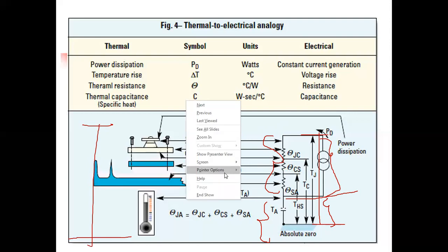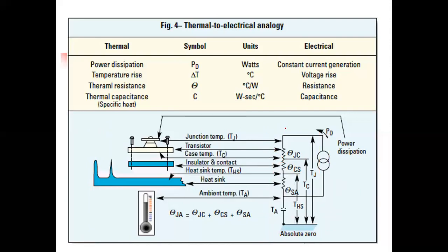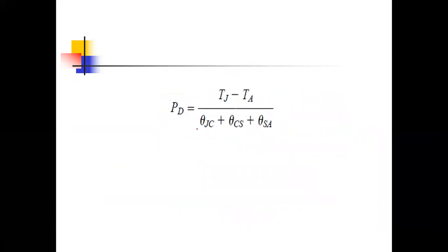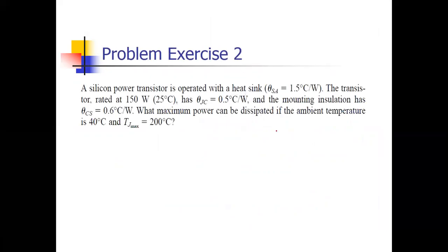The junction temperature spans from top to bottom in the thermal model, divided into two parts: the ambient temperature Ta at the bottom, and the upper part which is total thermal resistance θ multiplied by power dissipation Pd. From this expression, power dissipation is (Tj − Ta) divided by the sum of thermal resistances θjc + θcs + θsa.